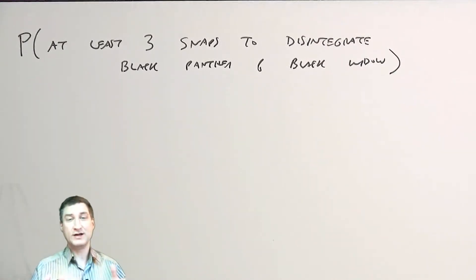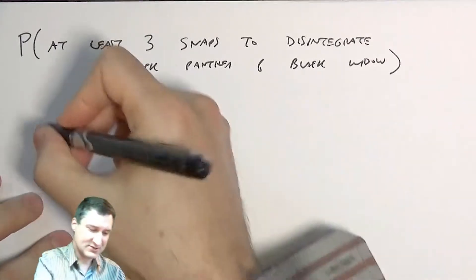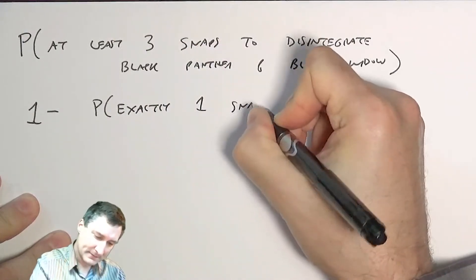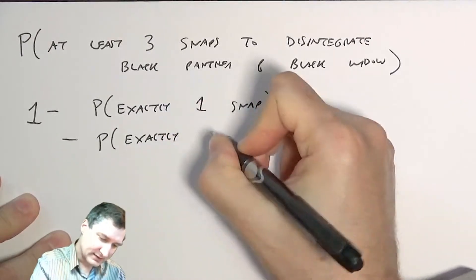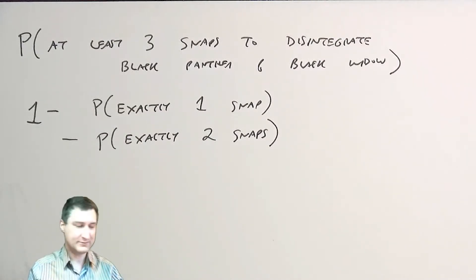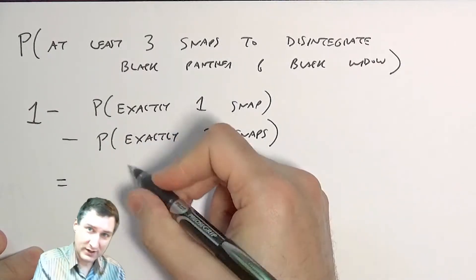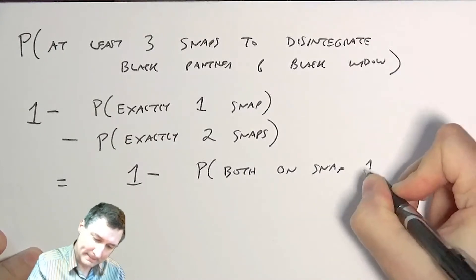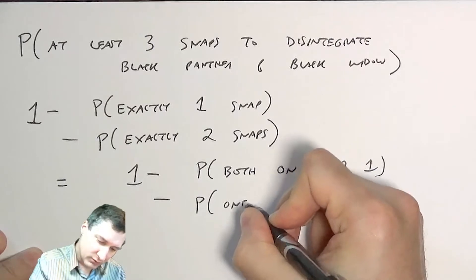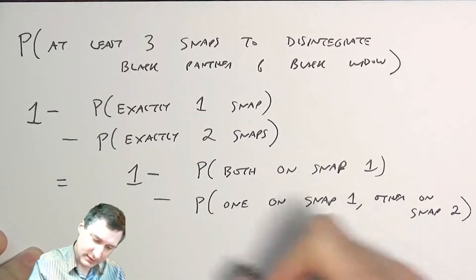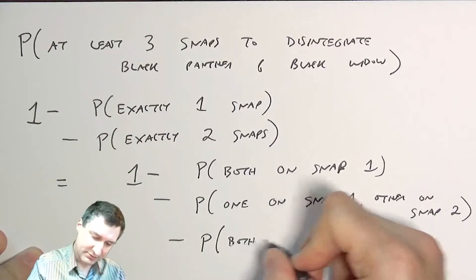There are lots of events that make up this probability — it could take three snaps, four snaps, eight snaps. A smarter way to decompose this is to write it as one minus the probability it takes exactly one snap, minus the probability it takes exactly two snaps. So that's: one minus the probability they both go on snap one, minus the probability one goes on snap one and the other goes on snap two, minus the probability they both go on snap two.